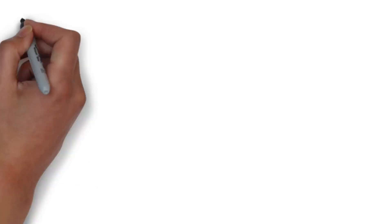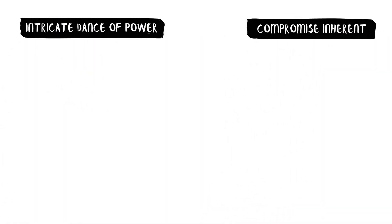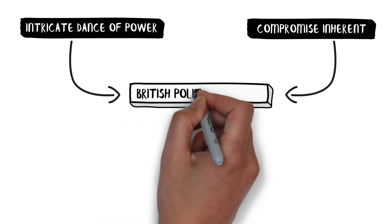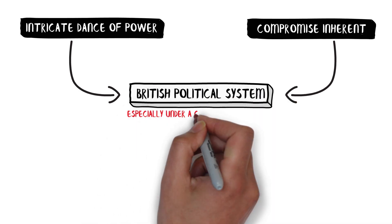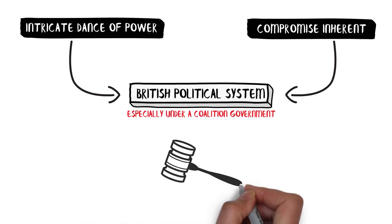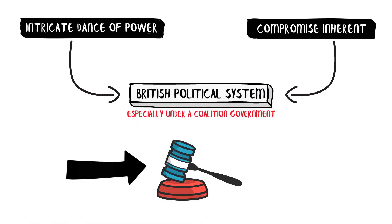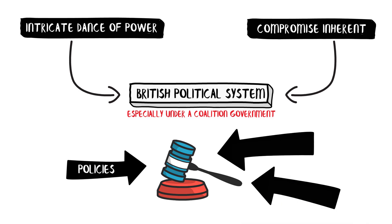This political maneuvering illustrates the intricate dance of power and compromise inherent in the British political system, especially under a coalition government. It's a system where decisions can hinge not just on policies, but also on personal and party dynamics.